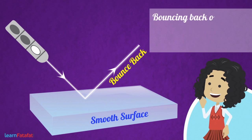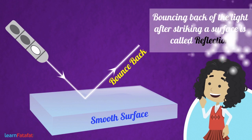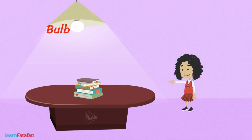What will happen? The ball bounces off the ground. In the same way, light also bounces off the surface. The bouncing back of light after striking a surface is called reflection.